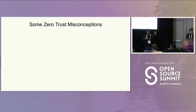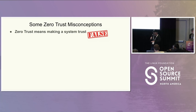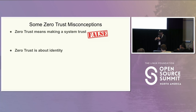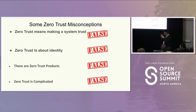Let's look at some misconceptions. First: zero trust makes a system trusted — that's false. How much trust should be in a system called zero trust? Zero. Second: zero trust is about identity — zero trust consumes identity and policy, they're not equivalent. Third: there are zero trust products — there are products that work well in a zero trust environment, but no single product makes you zero trusty. And finally: zero trust is complicated — there are really only nine things to know: four design principles and a five-step model.